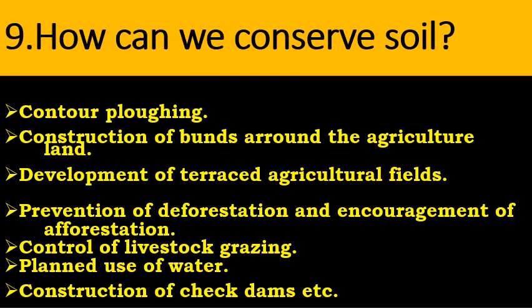How can we conserve soil? Methods include: contour ploughing, construction of bunds around agricultural land, development of terraced agricultural fields, prevention of deforestation and encouragement of afforestation, control of livestock grazing, planned use of water, and large-scale construction of check dams. Through these measures we can conserve soil.